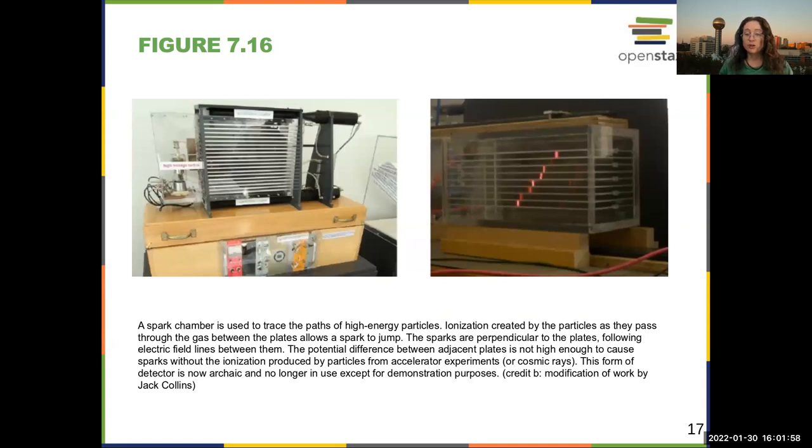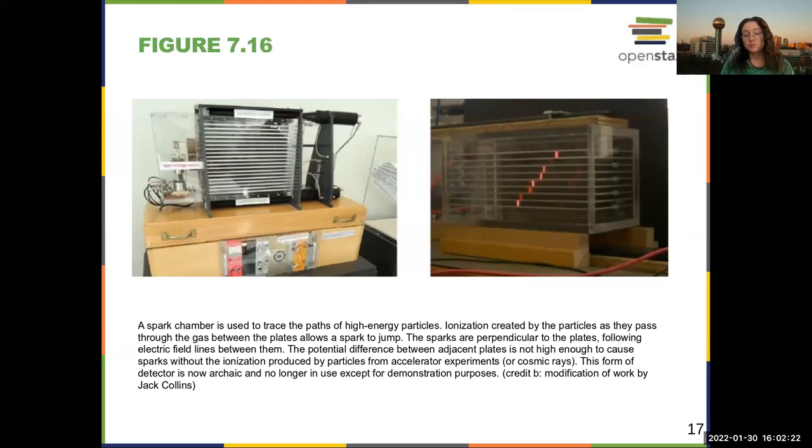You can also use these parallel plates. This example is a spark chamber where you have a bunch of parallel plates. When a high energy particle travels through spark plates, it will ionize the air, and that causes ions to jump across the parallel plates, and you can then see where they go. But we don't use these anymore in contemporary detectors. You don't actually visibly see where particles are going in real time.